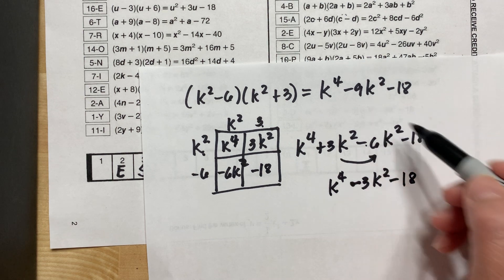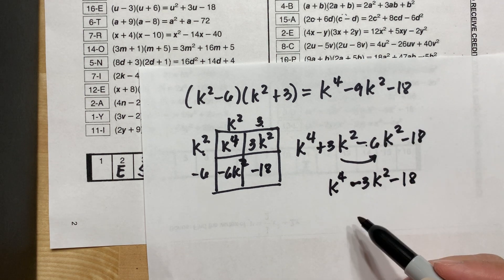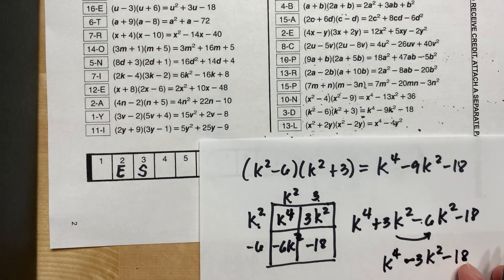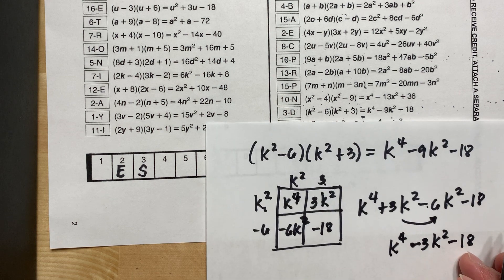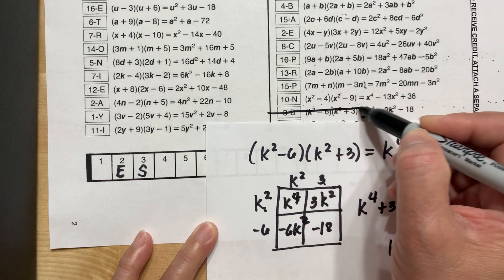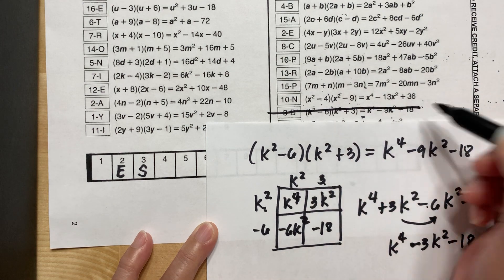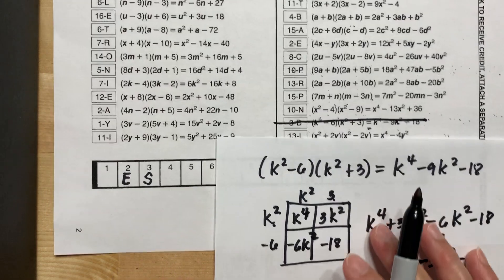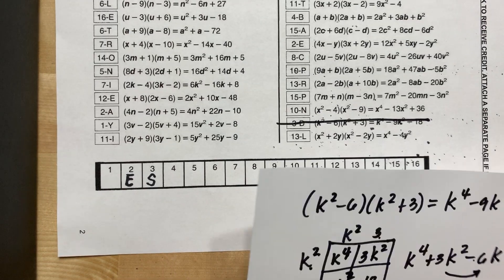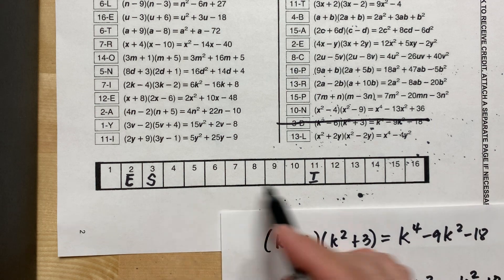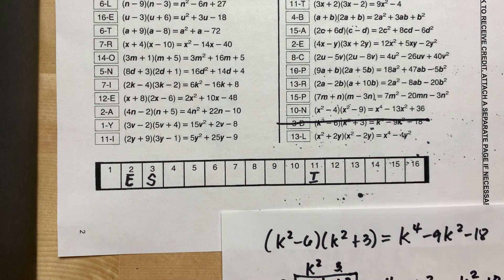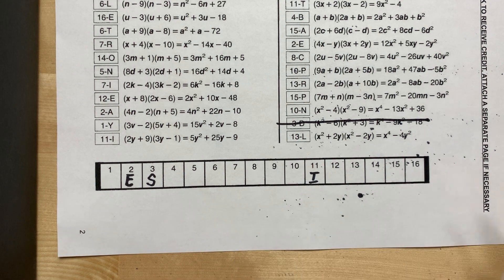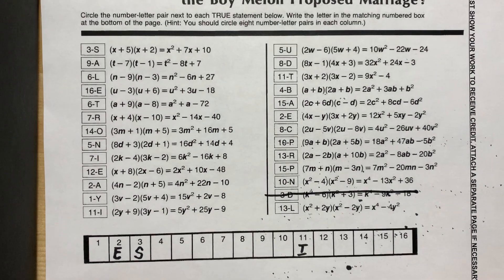Look — they're not the same. Meaning this is not true. You cross it out. It is not true, so you're not writing that letter in the puzzle. If you have a question, email me.